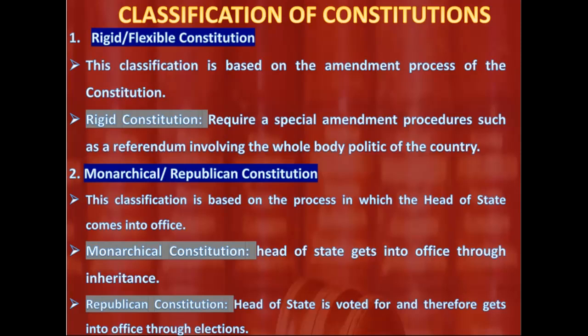The next classification is monarchical or republican. This is based on how the head of state gets into office. If the head of state gets into office through inheritance, it is a monarchical constitution. If the head of state gets into office through elections — as in Ghana, where you must campaign and win elections — then it is a republican constitution.